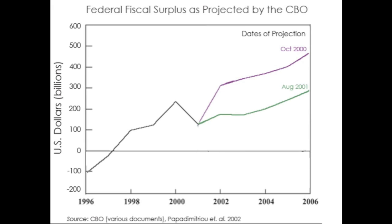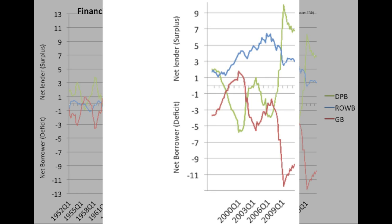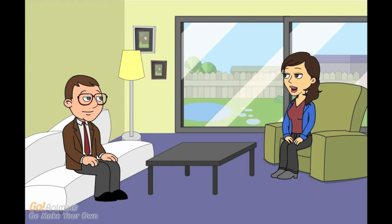The CBO projections don't take into account what must occur in the domestic private sector and rest of the world for that to be possible. These projections were considered great news — the government was praised for running a surplus. However, as Obama's quote illustrates, the government still holds the view that running a deficit is a bad thing. But notice that the domestic private sector balance moved increasingly into deficit in that highlighted period. In the first quarter of 2000, the government sector was running a surplus of 1.79% of GDP, while the domestic private sector was running a deficit of 5.77% of GDP — meaning the domestic private sector was taking on more and more debt. Over time this is unsustainable and can lead to a crisis. During the recent recession, the US government started to run larger budget deficits, and the domestic private sector started to run surpluses again.